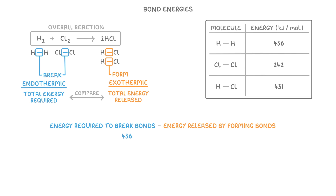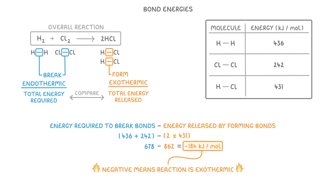In our case that would be 436 for the hydrogen-hydrogen bond, plus 242 for the chlorine-chlorine bond, minus 2 times 431 for the bonds within the two hydrogen chloride molecules, which simplifies to 678 minus 862, or negative 184 kJ per mole. And if you get a negative value like this, it means the reaction must be exothermic, as the chemicals are losing 184 kJ of energy to their surroundings.